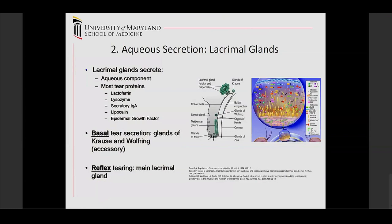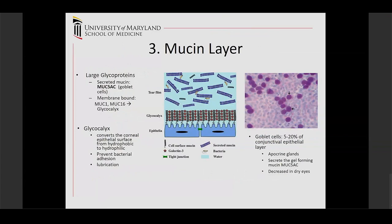And finally, the mucin layer — mucin 5AC is from the goblet cells, and there are also membrane-bound mucins. This layer prevents bacterial adhesion and also helps with lubrication.